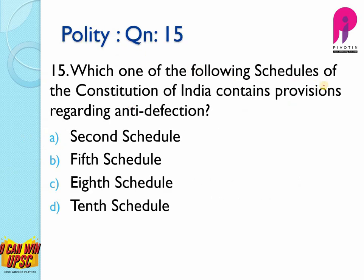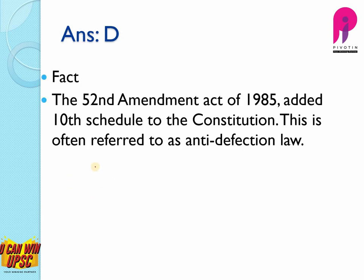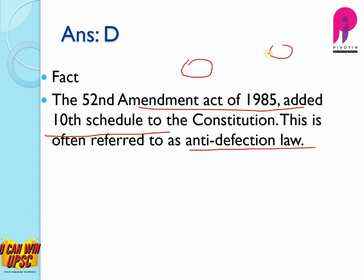Question number 15: which one of the following schedules of the constitution of India contains provision regarding anti-defection? This is also a very simple question. The answer is the 10th schedule. The 52nd Amendment Act of 1985 added the 10th schedule to the constitution, also referred to as the anti-defection law. This law was included because MPs and MLAs were moving from one party to another after winning elections, so to make them stay loyal to their party and stop party-hopping, the anti-defection law was brought into the picture.